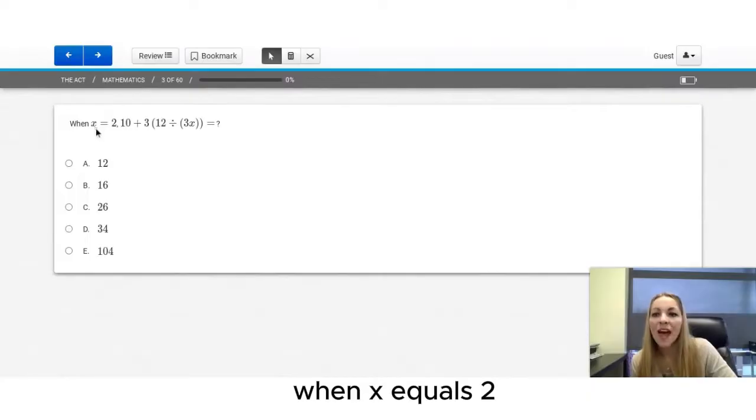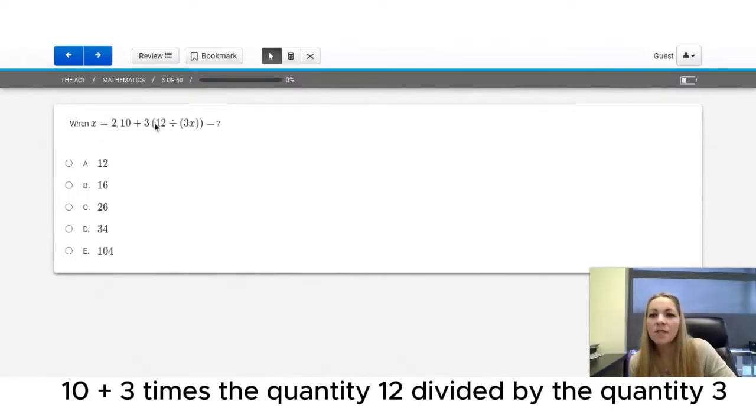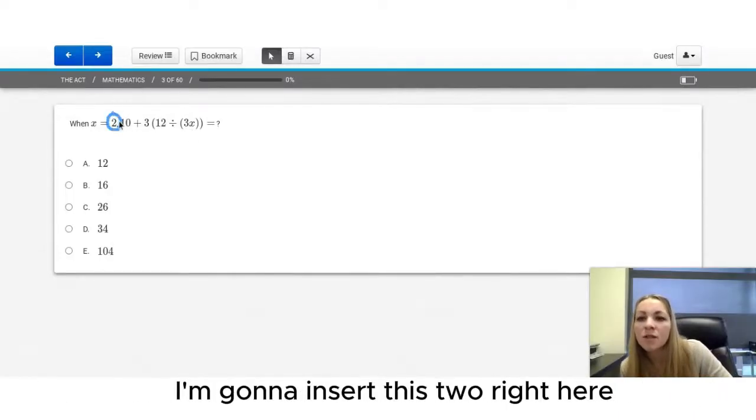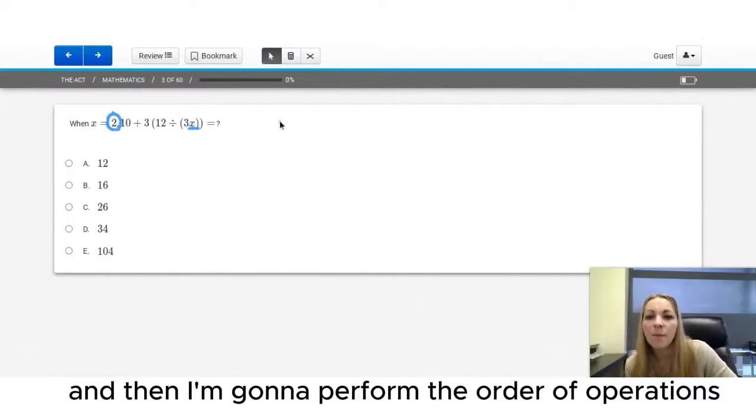Question number three. When x equals 2, 10 plus 3 times the quantity 12 divided by the quantity 3x. So what I'm going to do for this problem is insert this 2 right here and then perform the order of operations.